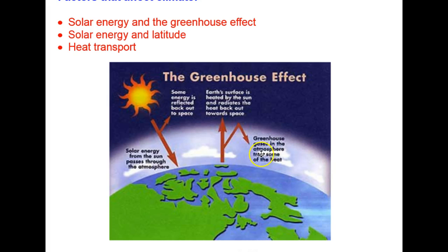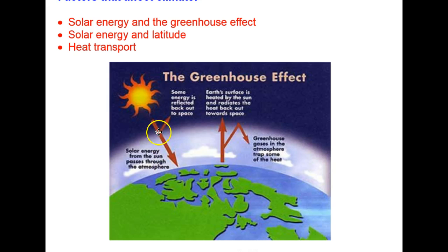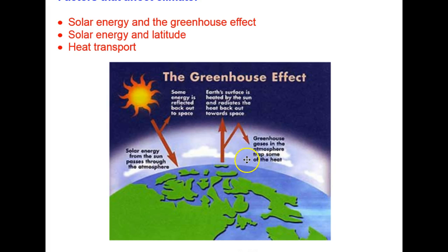The greenhouse effect is the effect of our atmosphere trapping the heat that shines on us by the Sun. Solar energy from the Sun passes through the atmosphere and bathes our planet's surface with sunlight. Initially a small amount of that energy is reflected back out into space, but most is transmitted through the atmosphere and falls on the surface of the Earth. The Earth's surface is heated and radiates that heat back towards space. However, the atmosphere traps some of that heat and holds it near the surface — that is why it's called the greenhouse effect, because it works just like a greenhouse used to grow plants.